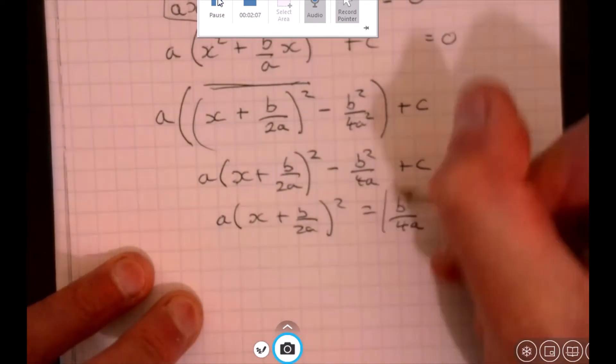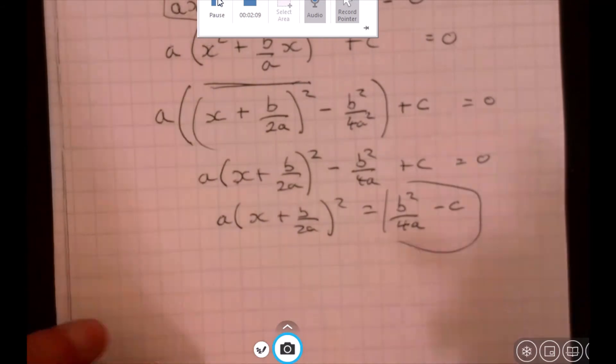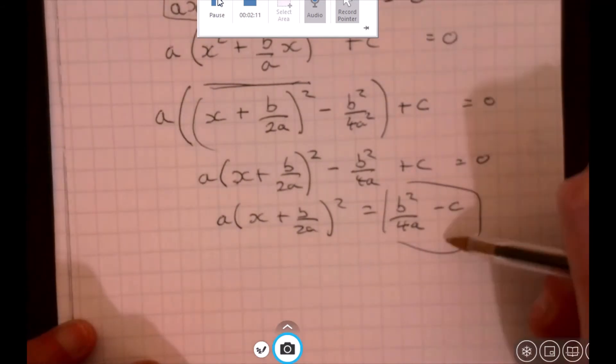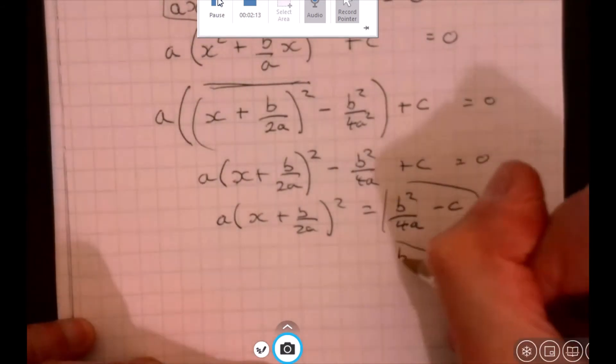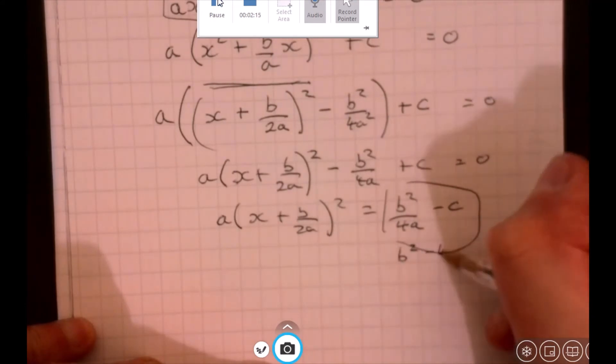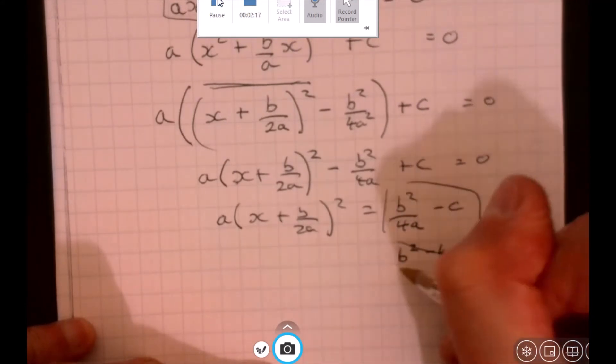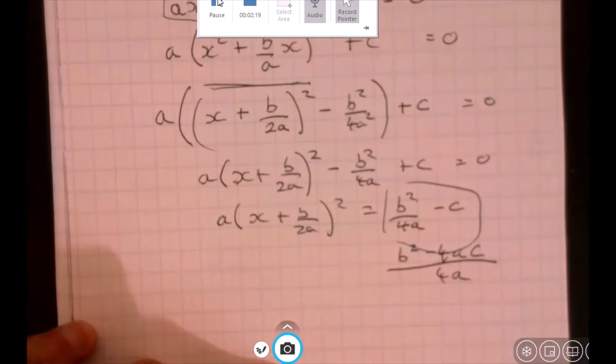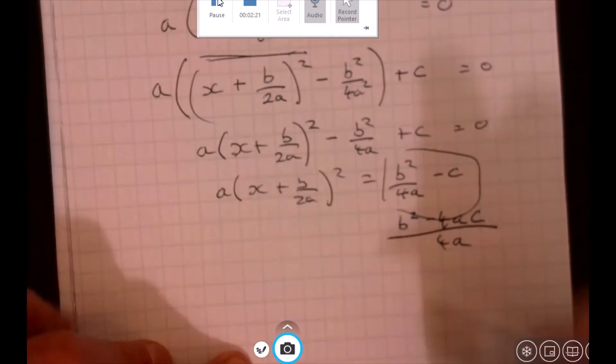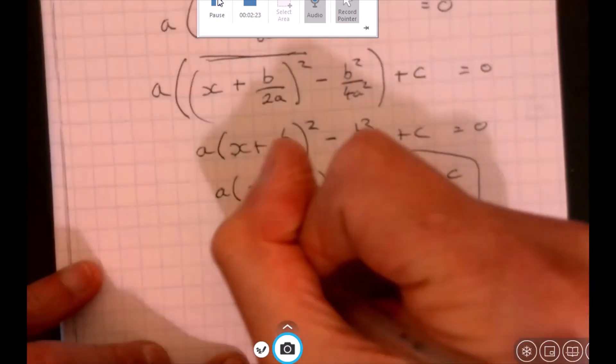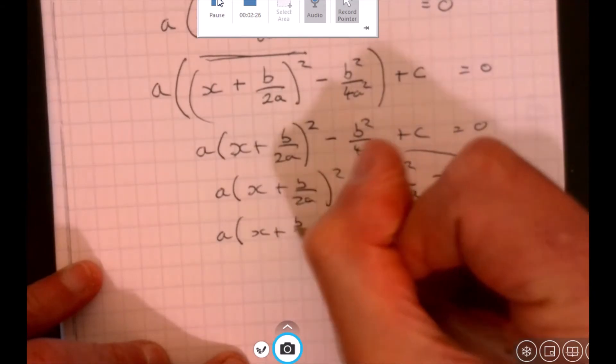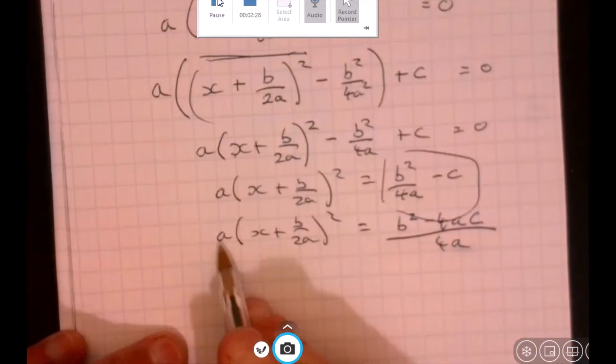Can we just rewrite this bit so it's one fraction? Multiply top and bottom here by 4a, so it becomes b squared minus 4ac over 4a. And now we're going to divide by that other a as well. Here we go. Divide by that a, bring him over here.